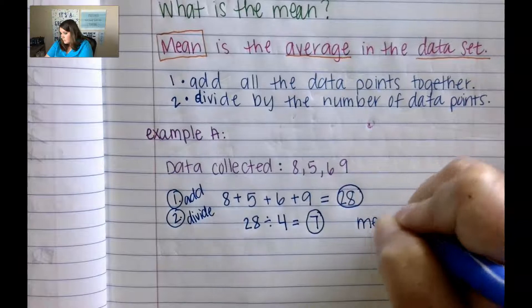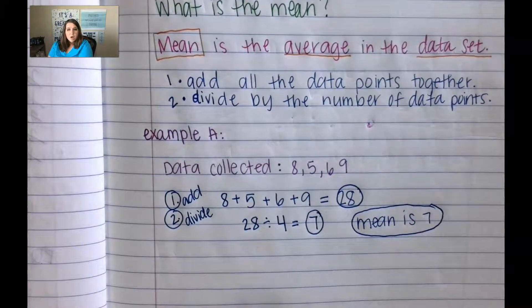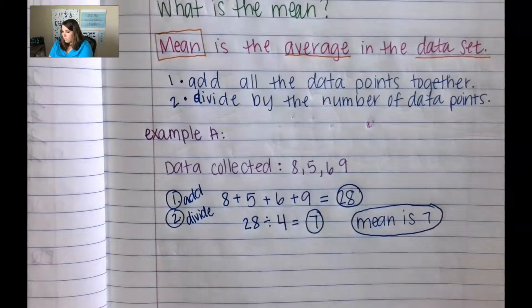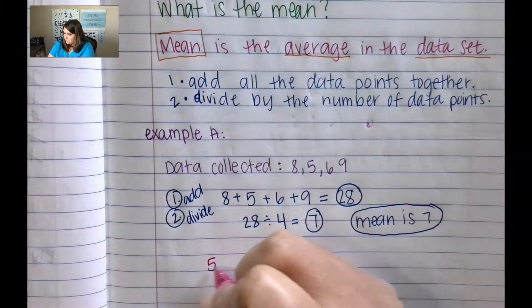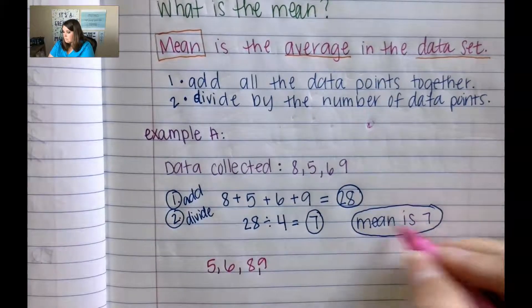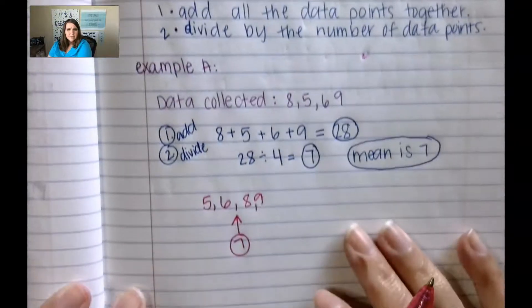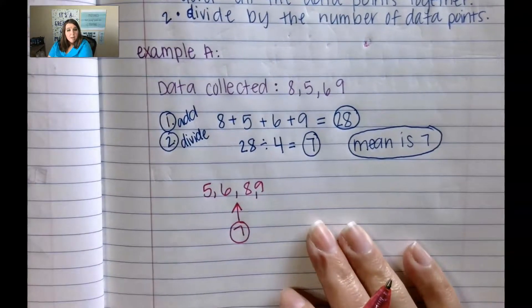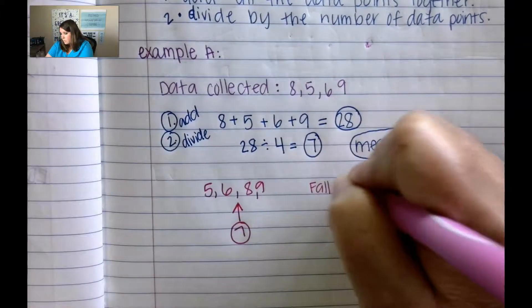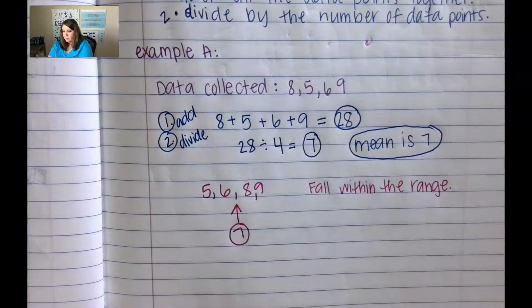So the mean is 7. You will know that it's a mean or an average because it falls within the data points. So if we were to put these in order from least to greatest: 5, 6, 8, and 9, the mean is going to fall right there as 7. It's not necessarily a data point that we started with, but it falls within the range.